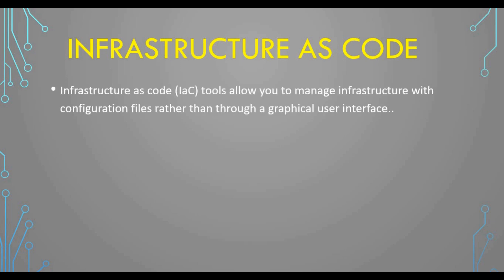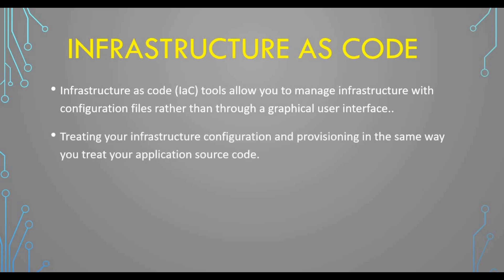Let's quickly talk about what is infrastructure as code, which we already covered in a previous tutorial. Infrastructure as code consists of tools which allow you to manage your infrastructure with configuration files rather than a graphical user interface. For example, rather than going to a web-based portal to click and create virtual machines or running command lines to create Docker containers, you write a configuration file and run it — it will automatically create your servers, networks, and all those things.